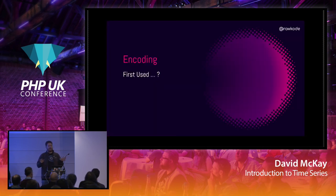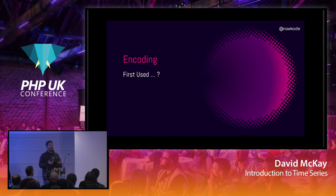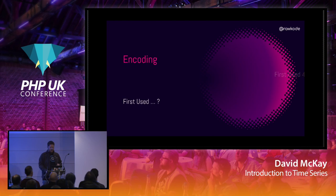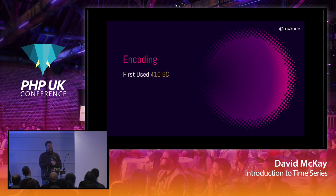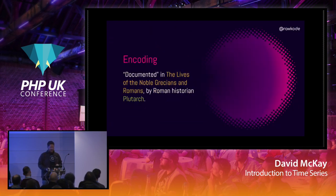As developers or operators we have to deal with the concept of encoding on a daily basis, whether that be JSON encoding or other formats. But when was encoding first used in modern civilization? The surprising answer is that it goes back to 410 BC — not that new. The encoding system was documented in Plutarch.